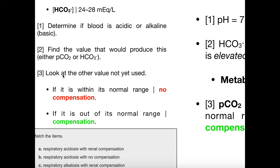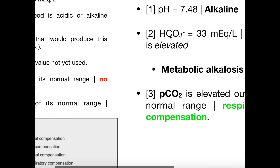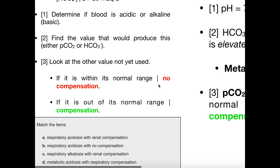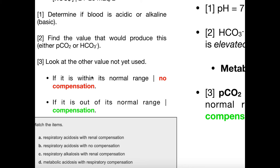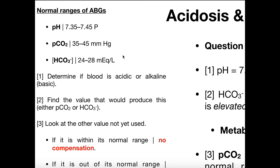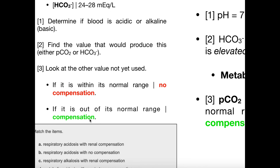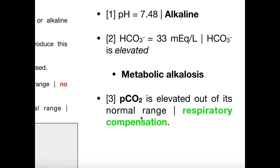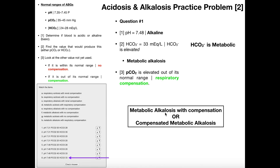For the last step, we look at the other value not yet used: pCO2. We check whether the pCO2 is in the normal range — no compensation — or out of the normal range — compensation. Our pCO2 was 55, which is above the upper limit, so it's out of that range. Because it's outside the normal range, there is compensation through the pCO2, and pCO2 is respiratory. Therefore, we do have respiratory compensation. Our final answer is metabolic alkalosis with respiratory compensation.